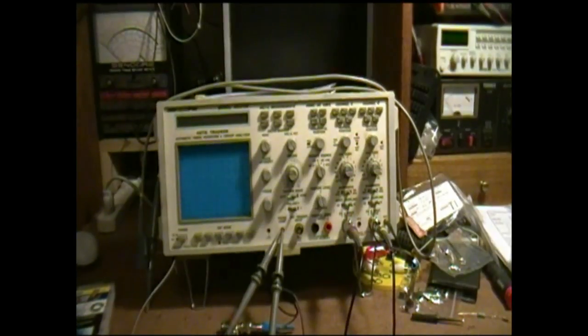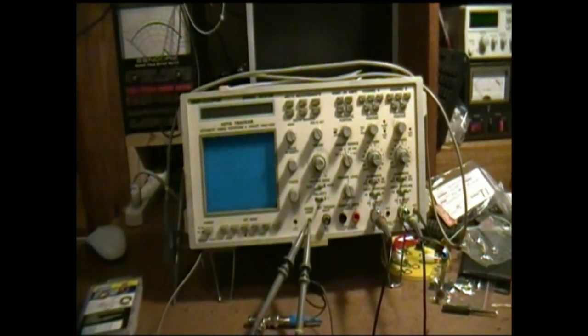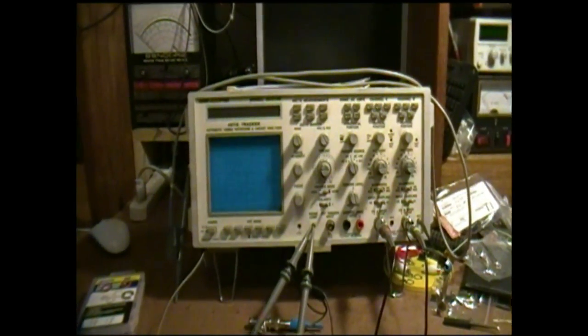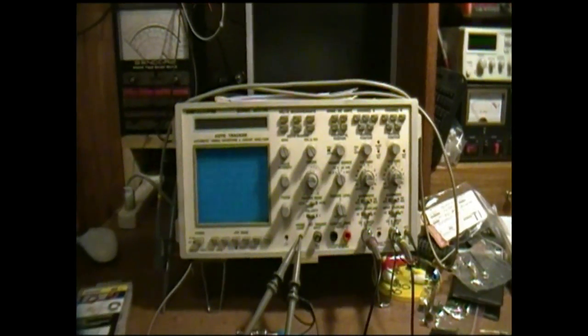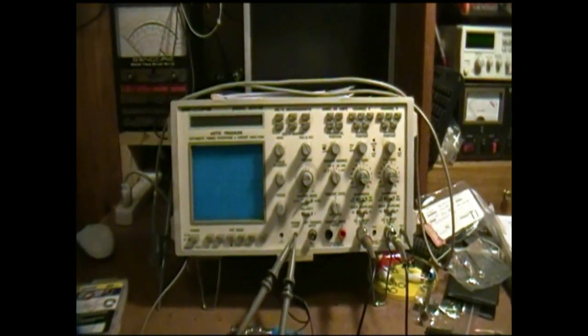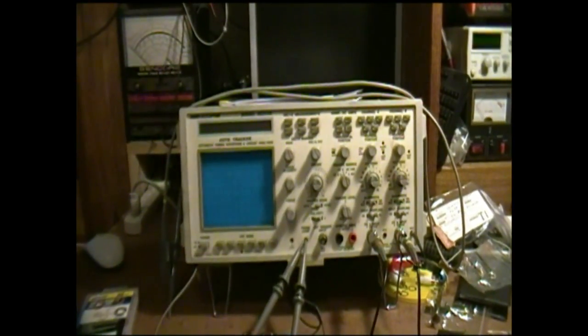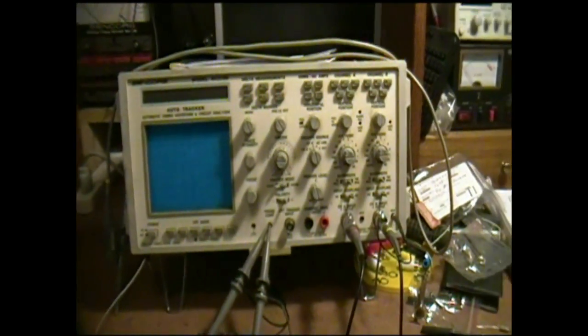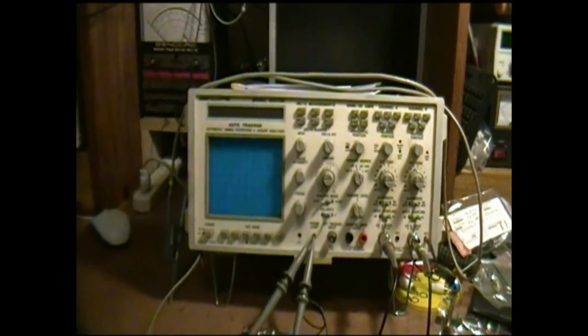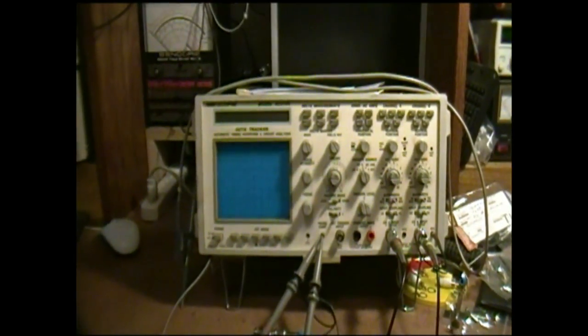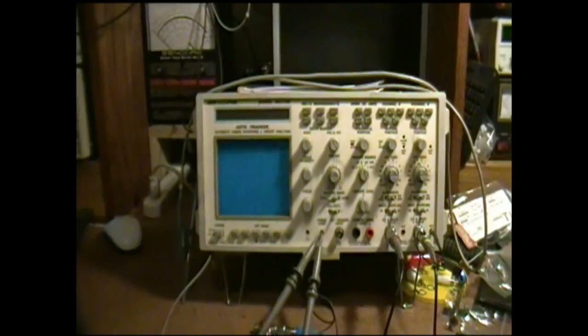This scope when Sencore sold it new cost several thousand dollars. It has a few features that are kind of neat, but it also has a couple of issues in terms of the accessories. I think one of the reasons they are showing up on eBay is a number of shops and labs and schools are closing.